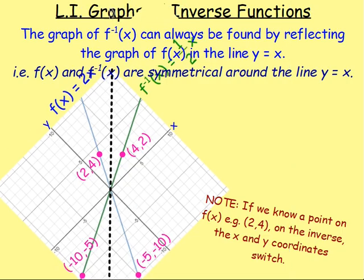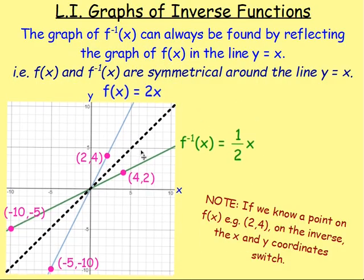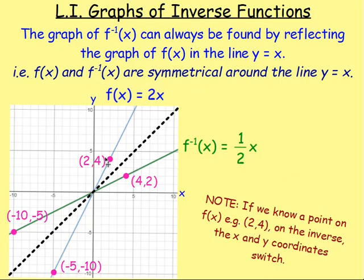So if you know one of the points on f of x, you can easily work out the point on the inverse. And the way you do that, as it says down here, if we know a point such as 2, 4, on the inverse, all we do is we switch the x and the y coordinates around. So instead of 2, 4, it'll be 4, 2.